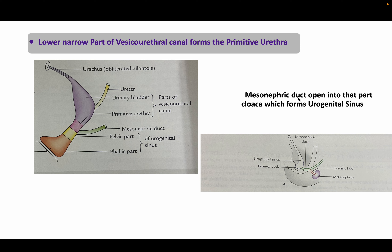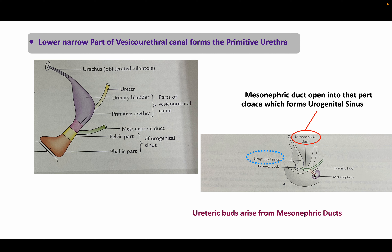The mesonephric duct opens into that part of the cloaca which forms the urogenital sinus. The ureteric buds arise from the mesonephric duct, as discussed in the previous lecture on kidney and ureter development.